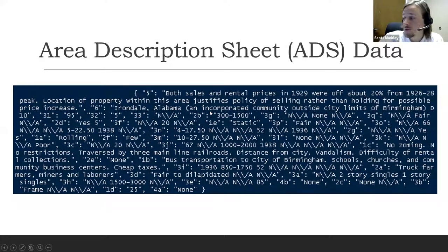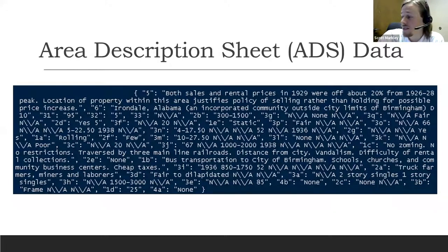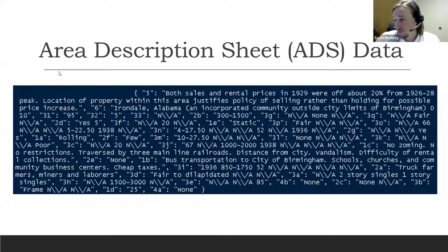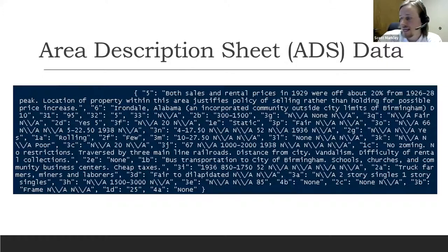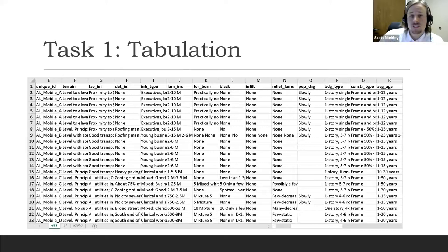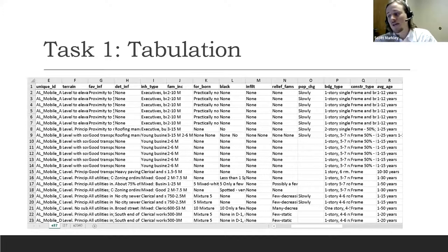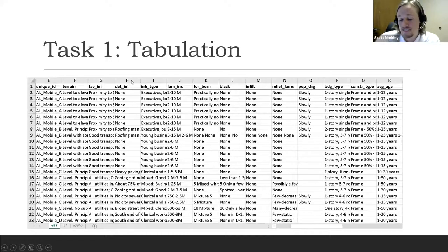However, when you import that data, you get all those characters and numbers and symbols crammed into a single cell — not super useful in its current format. The aim of this project was to take this information and put it in a more usable tabular format that would allow analysis of those variables in the area description sheets. The first step was to tabulate the data: take it from that single cell in Excel and put it across multiple cells with header names you can make sense of.